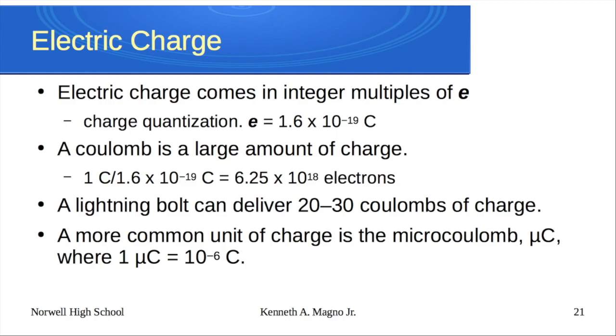Now, in terms of a coulomb, a coulomb is a very, very large unit. So one coulomb would be divided by that 1.6 times 10 to the negative 19 coulombs per electron would give me 6.25 times 10 to the 18th electrons in one coulomb of charge. That's a lot of electrons. Those lightning bolts could have 20 to 30 coulombs of charge in them.